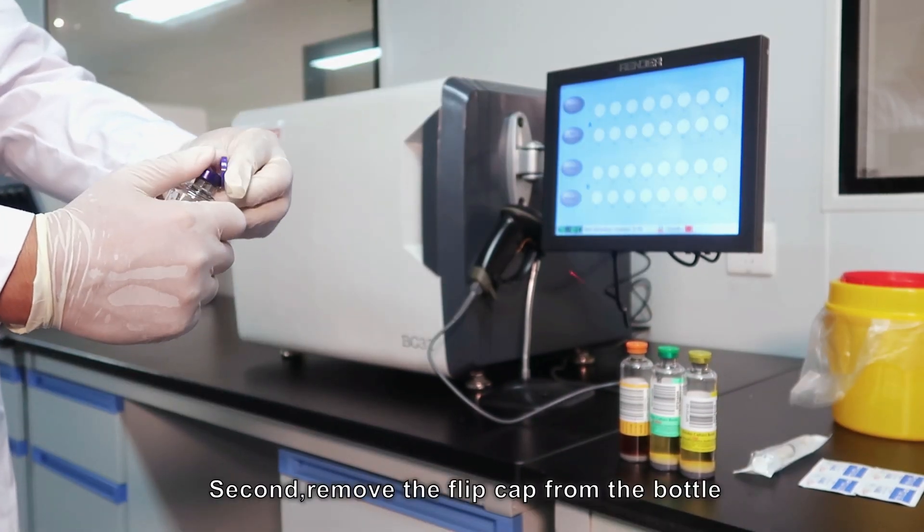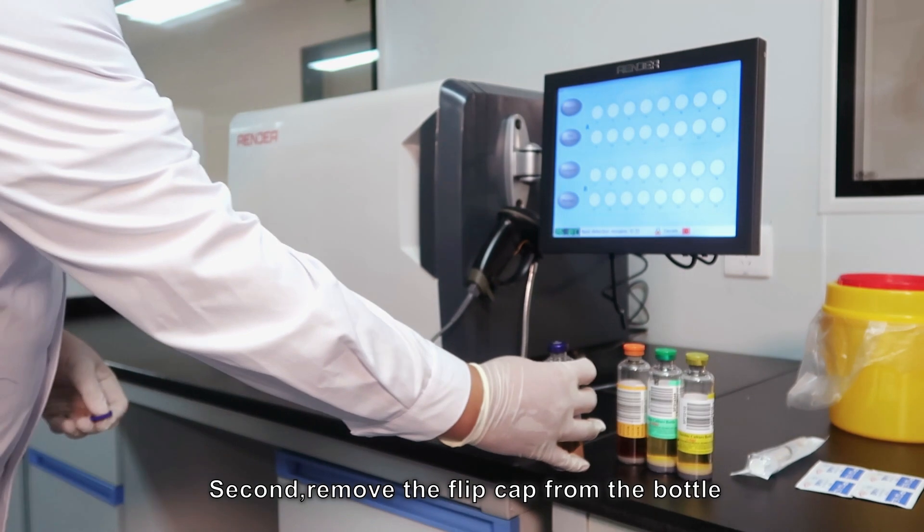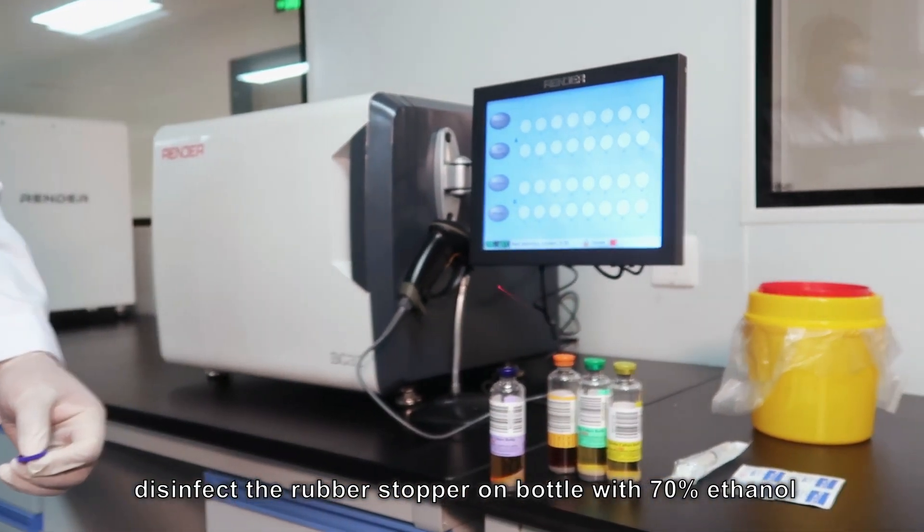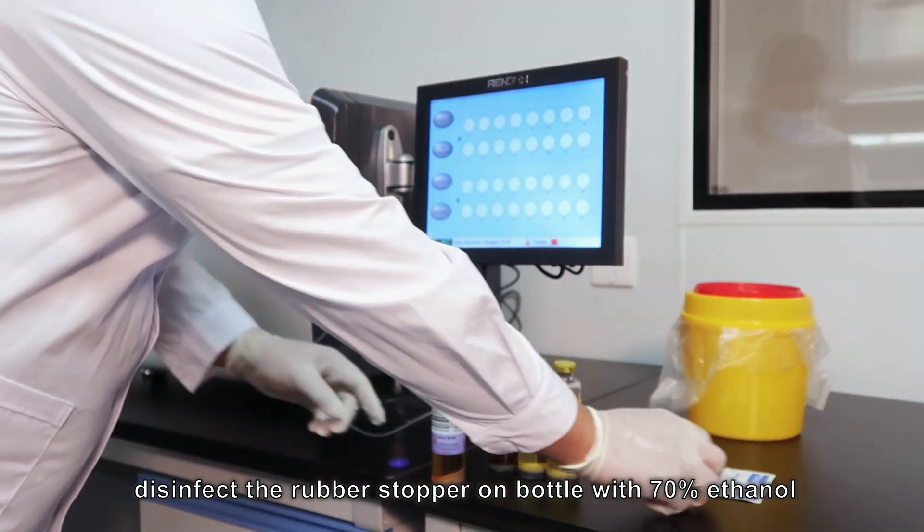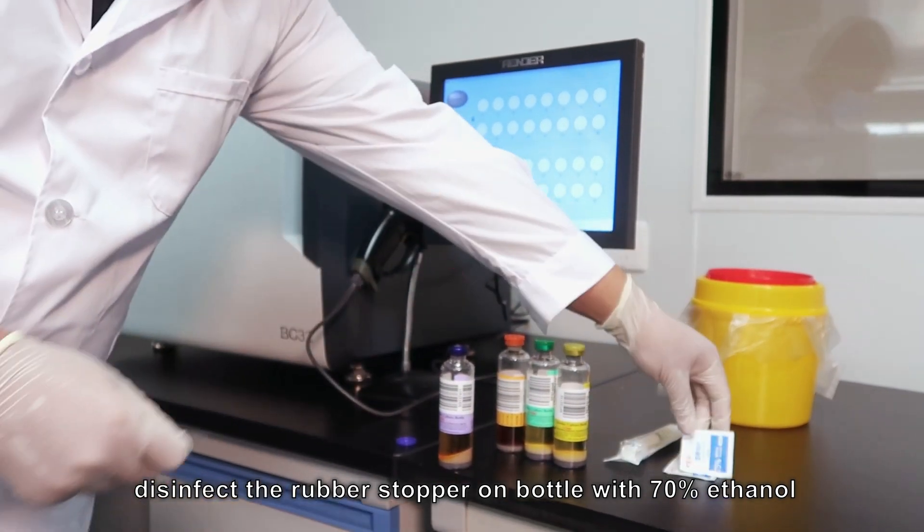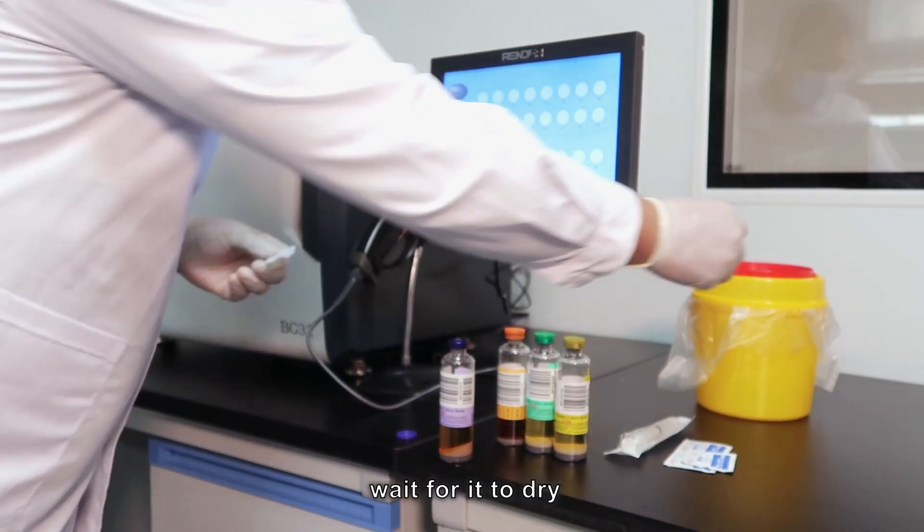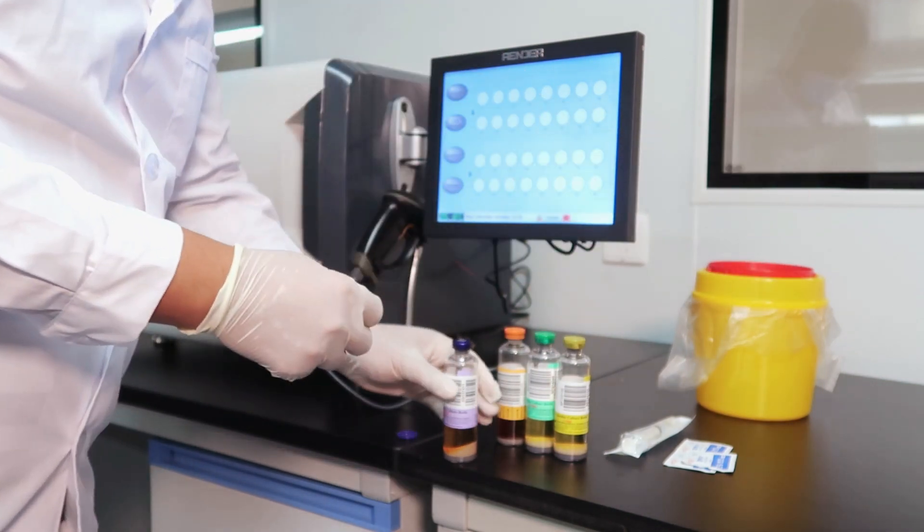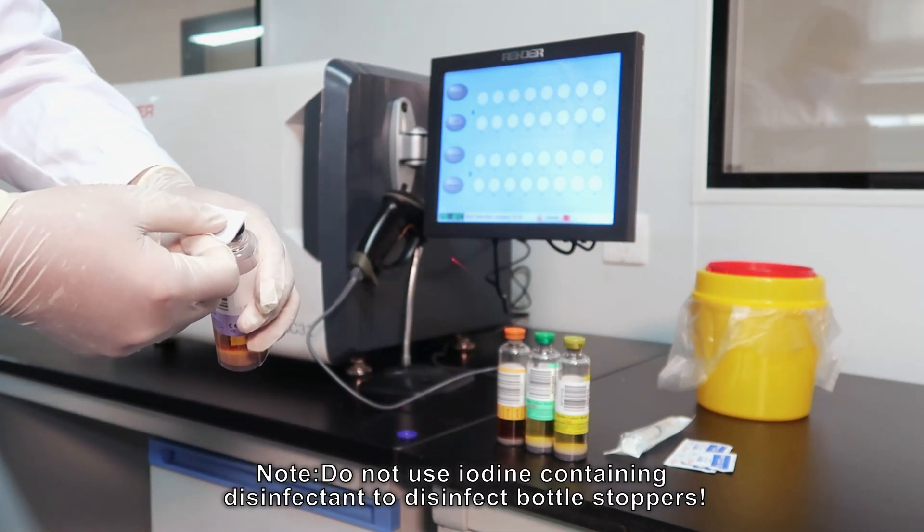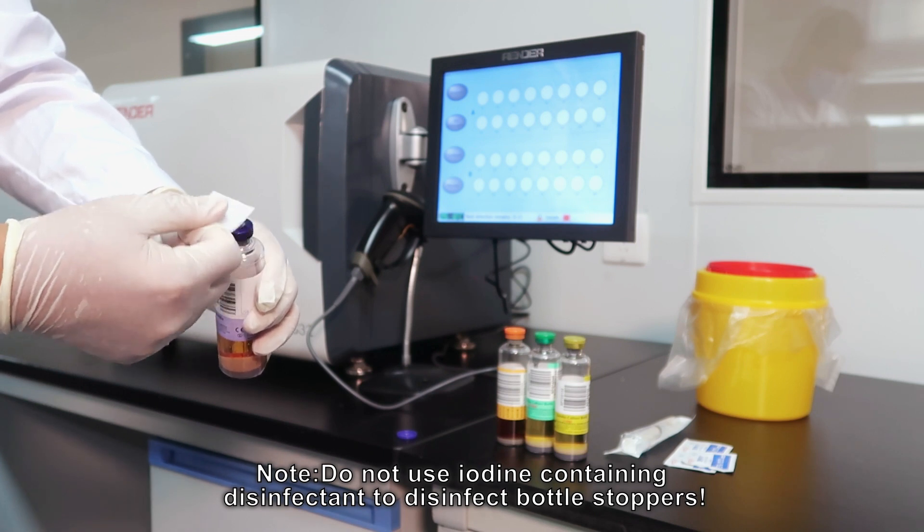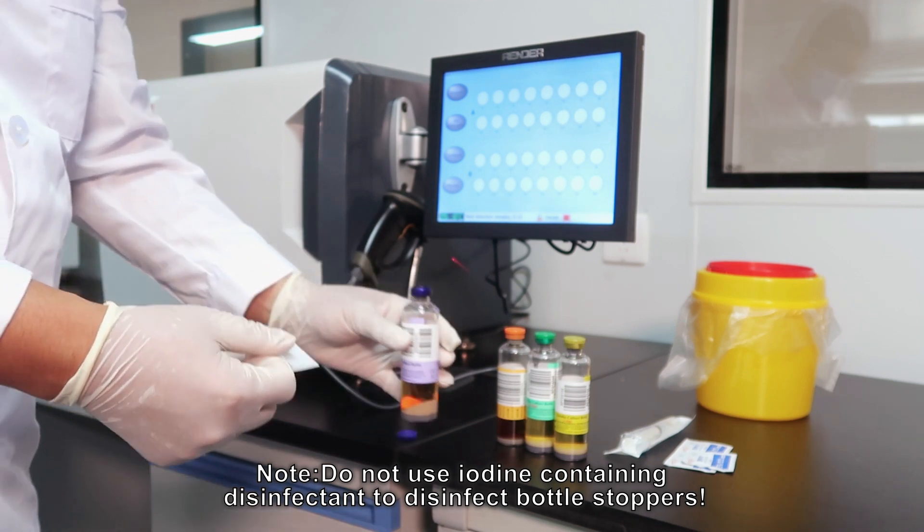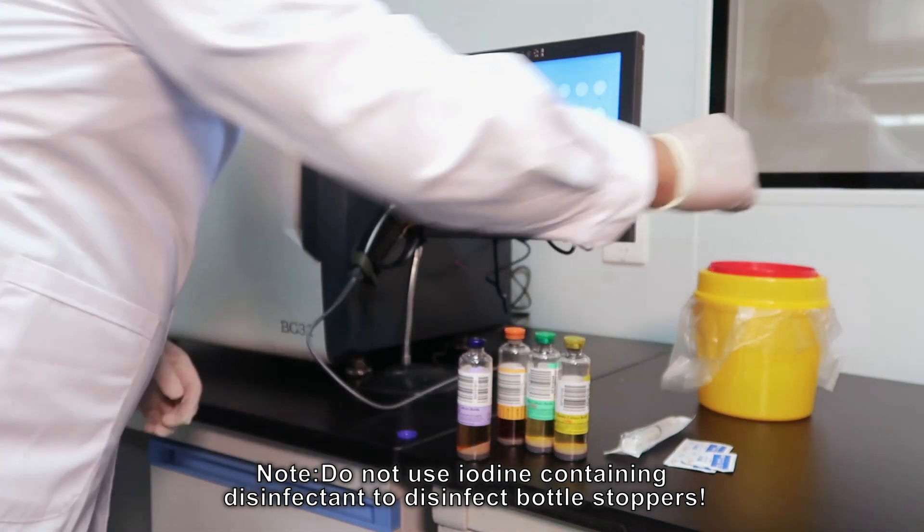Second, remove the flip cap from the bottle. Disinfect the rubber stopper on bottle with 70% ethanol. Wait for it to dry. Note: do not use iodide-containing disinfectant to disinfect bottle stoppers.